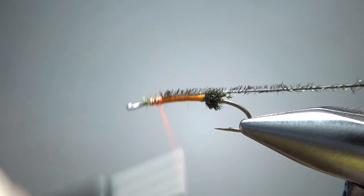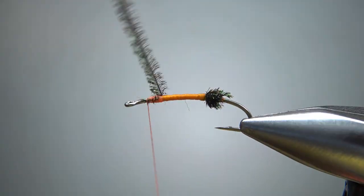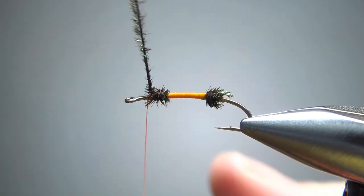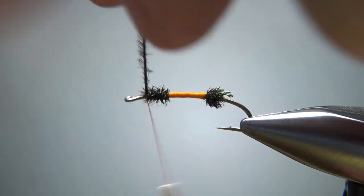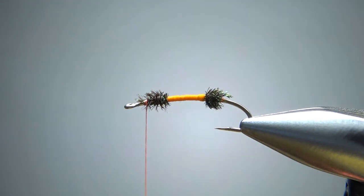And take the rest of this peacock herl right here and catch this in. Did I leave enough to grab and break it? We'll see. Yep, sure did. Okay, and then do a thorax here about the same width as the butt there. Okay, I think that's going to be fine.